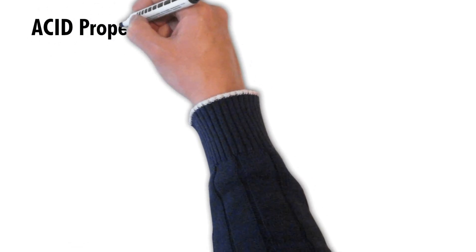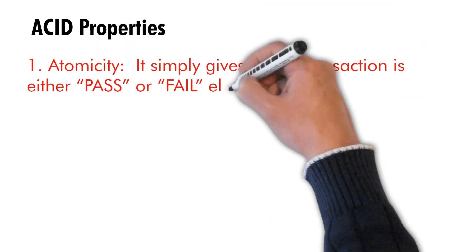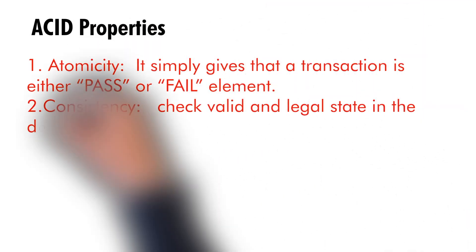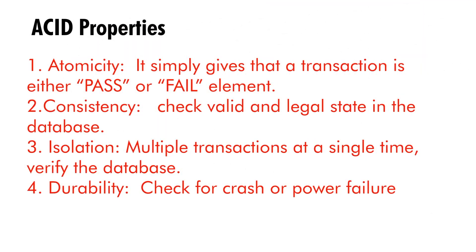ACID properties: Atomicity simply states that a transaction either passes or fails entirely. Consistency checks for a valid and legal state in the database. Isolation handles multiple transactions at a single time and verifies the database. Durability checks for crash or power failure and verifies how durable your database is.